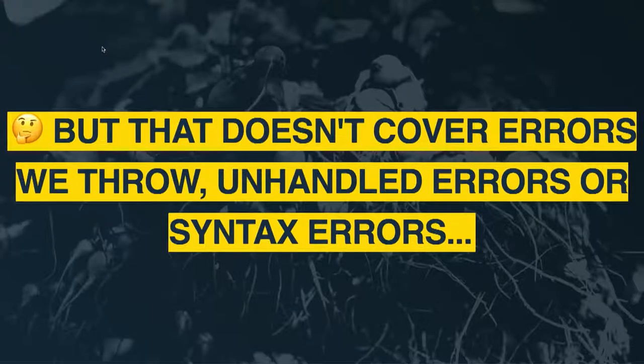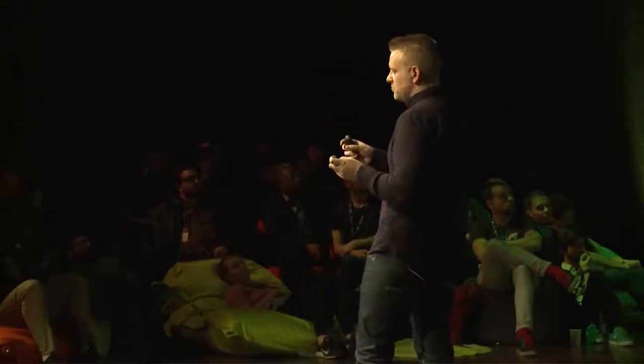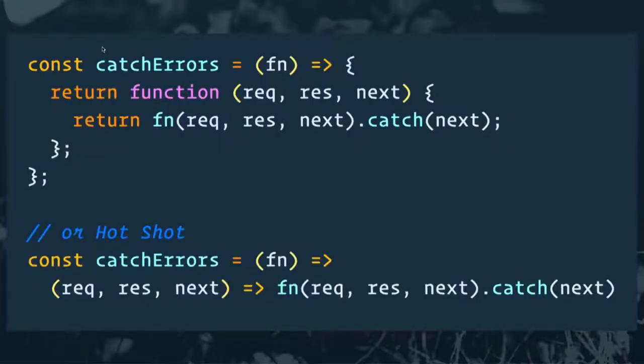But that doesn't really cover errors that we throw — you have to explicitly call next for that to work. It doesn't handle unexpected errors, syntax errors, database connection errors, or anything else that happens along your middleware. So what we need to do is catch all of our errors and pass them to the next function. This is where our higher-order function comes in: I create a function that takes in the function and returns a new one — just the regular request/response/next function with a dot-catch chained on the end that calls next with the error.